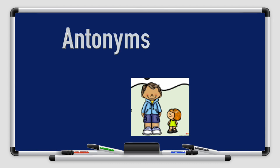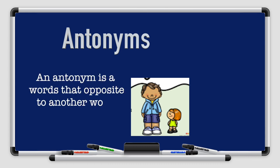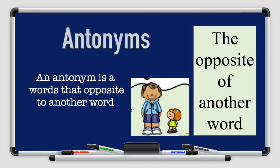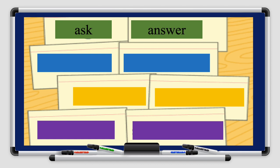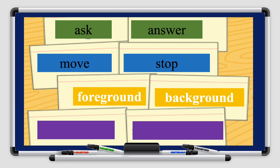Now let's take the opposite, which is antonyms. Antonyms means the opposite of the other word. I'll give you some examples. The word 'ask' and 'answer' — when you ask a question you get an answer, so they are opposites. The next example: 'move' and 'stop' — it's kind of obvious, they are antonyms. The next example: 'foreground' and 'background' — foreground is in the front and background is in the back, so they are opposites, they are antonyms. The next example: 'old' and 'modern' — they are opposites too.